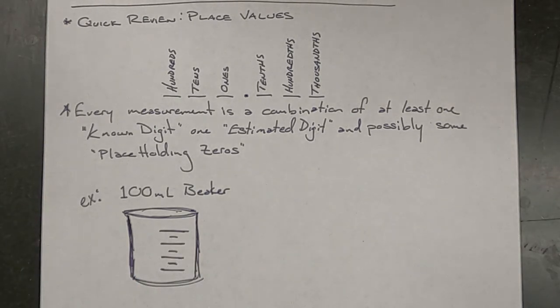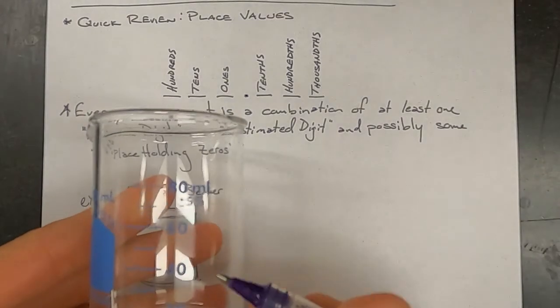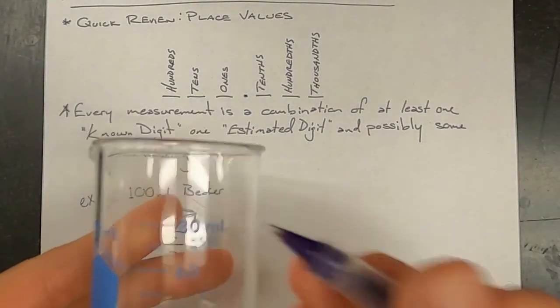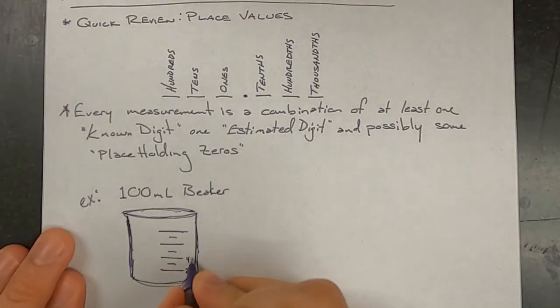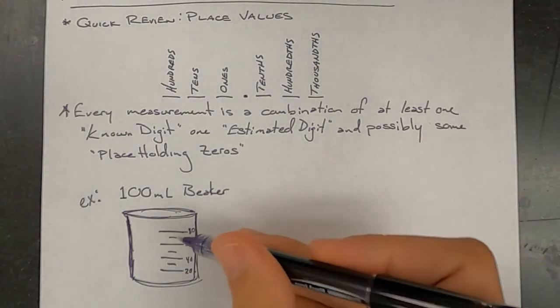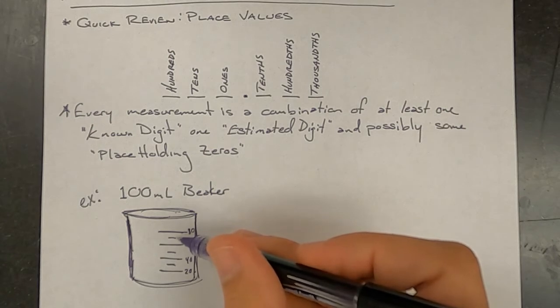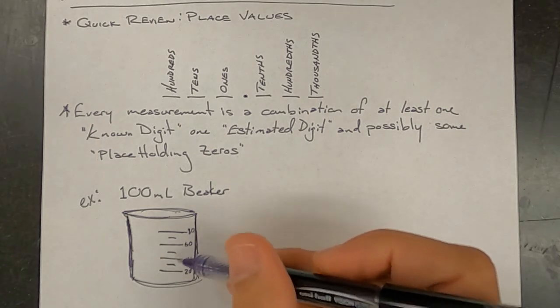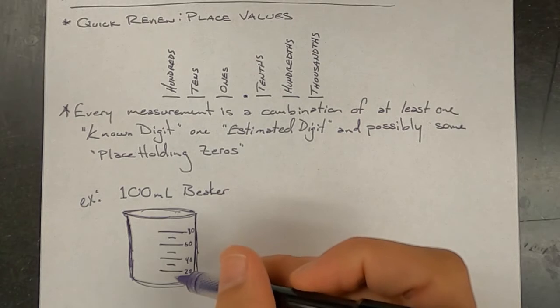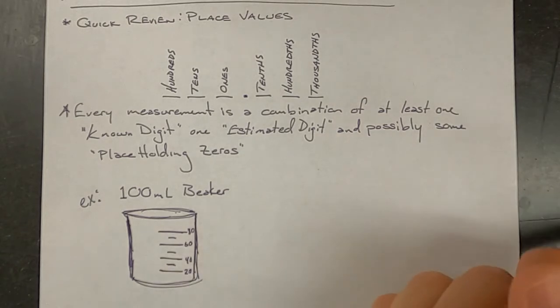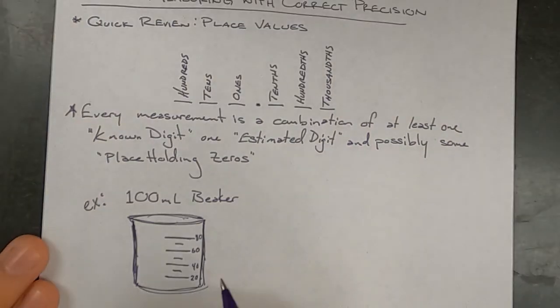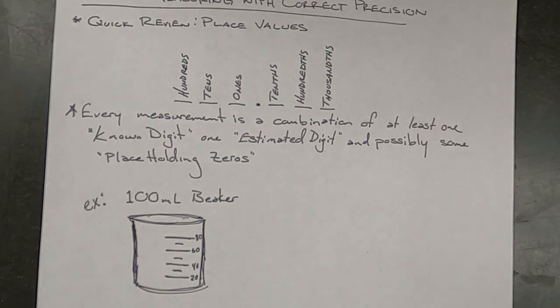And the longer lines are labeled 20, 40, 60, and 80. And so we can tell that these marks in between, though it's not listed, this mark would be for 70 milliliters, this mark would be for 50, and this mark would be for 30. There is no mark for 10 milliliters on here. So at this point I'm going to draw in a liquid level.